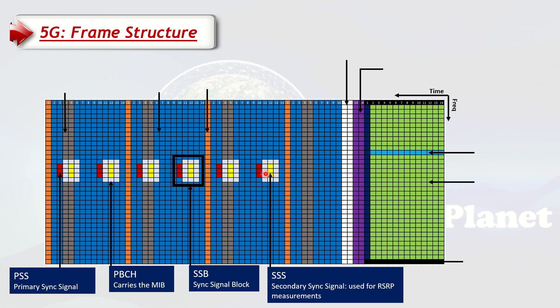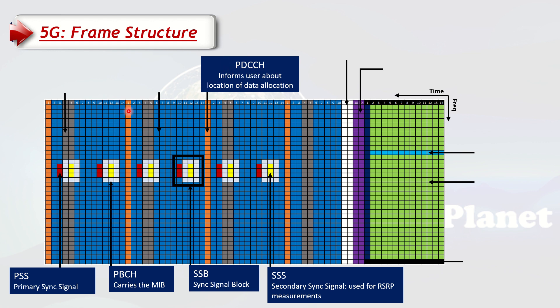The next important channel for network access is the PDCCH — the Physical Downlink Control Channel. All these orange bars in the diagram are the PDCCH. PDCCH usually occupies the first symbol; it can also be in the second symbol, but many vendor implementations only use it in the first symbol for now, because there isn't that much of a traffic bottleneck on 5G right now.